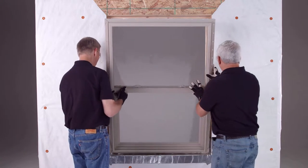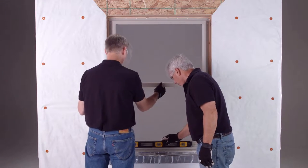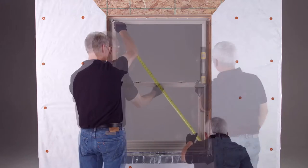Now center the window in the rough opening on the shims. Then check the window for level, plumb, and square.